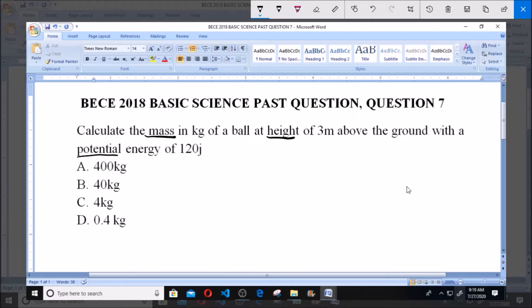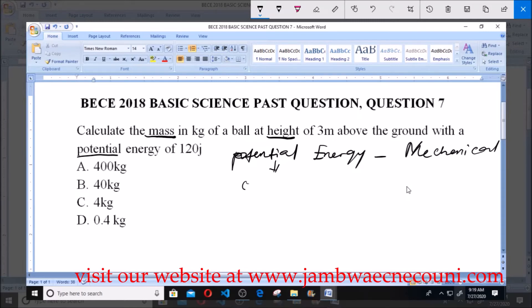Now, like we know, potential energy is a type of mechanical energy. This is the energy possessed by an object at rest.